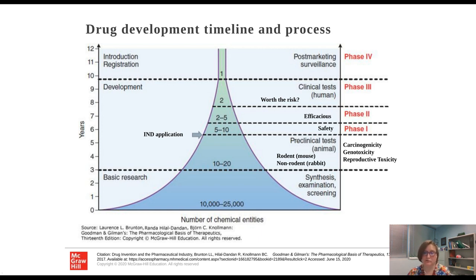In animals, they are generally first screened in one rodent type, such as mouse, and then moved on to one non-rodent animal, such as rabbit. Of the 10 to 20 chemical screenings that move from initial synthesis and screening, we look for a number of things, including carcinogenicity, genotoxicity, and reproductive toxicity, as well as assessing if they are safe and effective in the animal model.